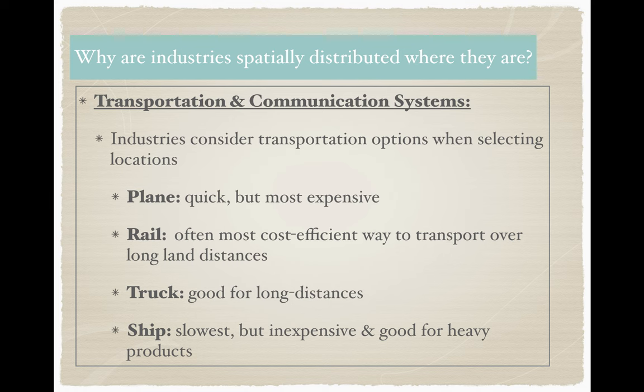A huge component of your industrial location decision will come down to transportation and communication systems. Industries have to consider their options for transportation. This is a connection back to the origins of industrialization — when we talked about the availability of rivers and coal to fuel the plants. In modern day, you have to consider your ability to transport the goods that you are producing.